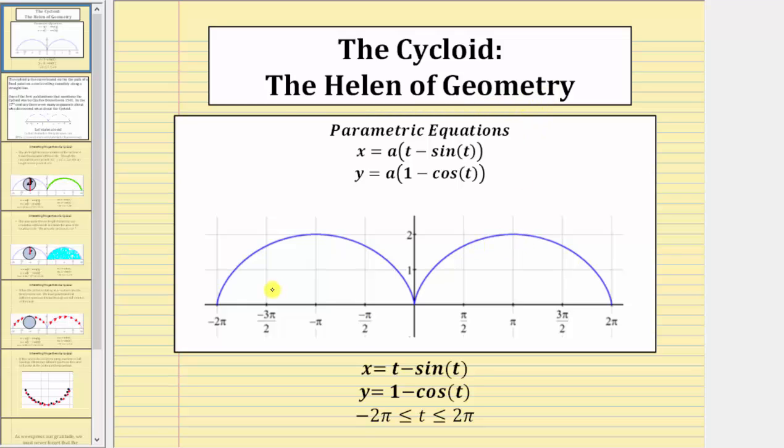Here's an example of the graph of a cycloid. In general, a cycloid is given by the parametric equations x equals a times the quantity t minus sine t, and y equals a times the quantity one minus cosine t, where a is any constant.